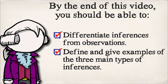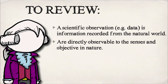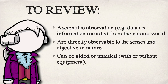Before we talk about inferences today and give examples of the three main types of inferences, I thought it might help to review what observations are. An observation is information recorded from the natural world, at least in the scientific sense. This is essentially what we call data. These are directly observable to the senses and objective in nature.